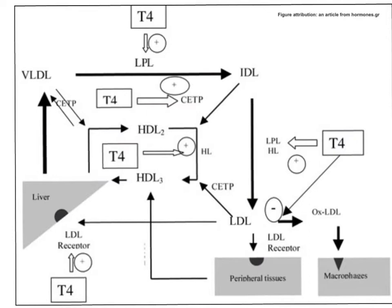The first effect I would like to explain is the effect of thyroid hormones on the HMG-CoA reductase enzyme gene. HMG-CoA — that is hydroxy methyl glutaryl CoA reductase — is a rate-limiting enzyme in cholesterol biosynthesis. Thyroid hormones induce the gene for HMG-CoA reductase, thereby increasing the quantity of HMG-CoA reductase and synthesizing more cholesterol.